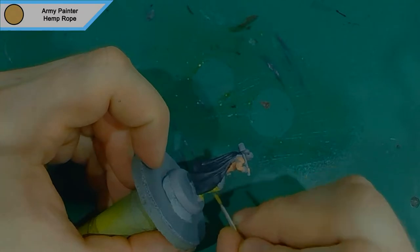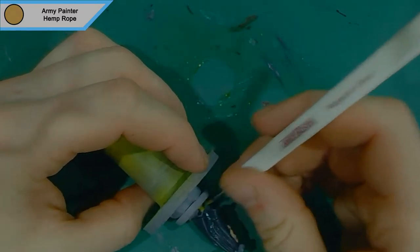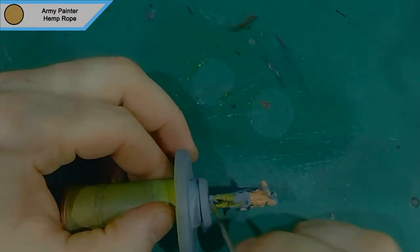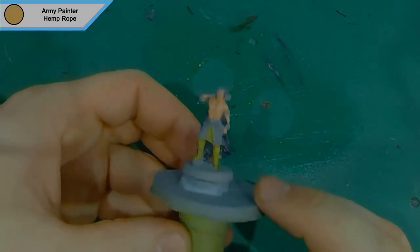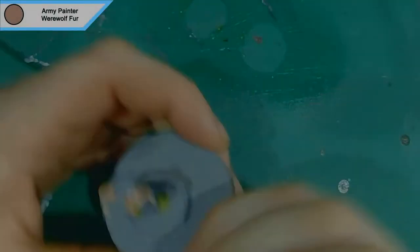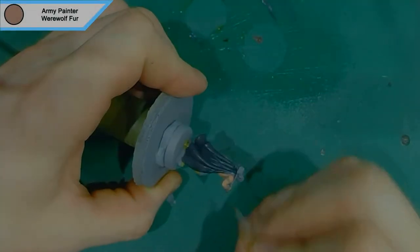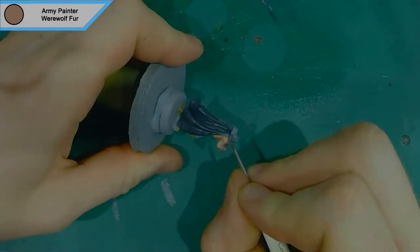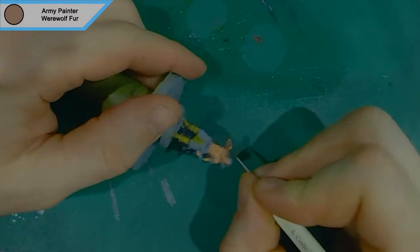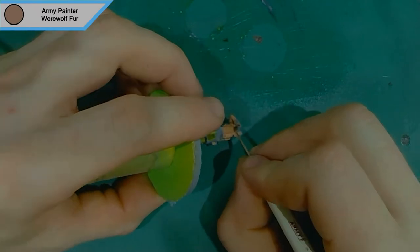Hemp rope is looking very green in this video now I'm watching it back. Hemp rope isn't that green. The color indicator at the top left is more accurate. Now we've moved on to werewolf fur.